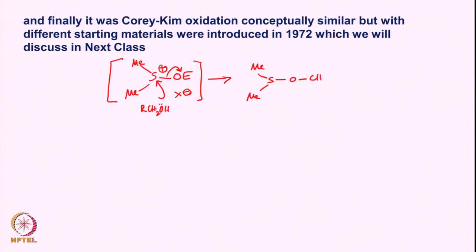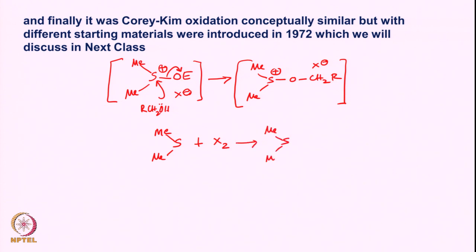To get this intermediate, one can also start not from DMSO but from dimethyl sulfide and react with some electrophile such as a halogen, generating an intermediate of this type which can also act as a crucial intermediate. The alcohol can react with it and form the intermediate which eventually gives the aldehyde or ketone. This was developed by Corey and Kim, which we will discuss in our next class in more detail.